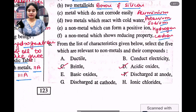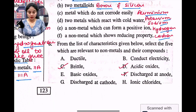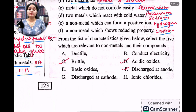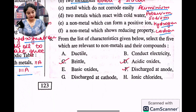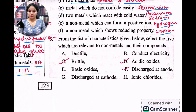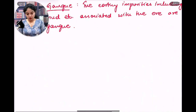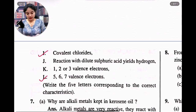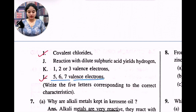Question six: from the list of characteristics given below, select the five which are relevant to non-metals and their compounds. For non-metals: ductile is not valid. Conduct electricity — no. Brittle — yes, non-metals are brittle. Acidic oxides — yes. They discharge at the anode. Covalent chlorides — yes. And they have five, six, and seven valence electrons.